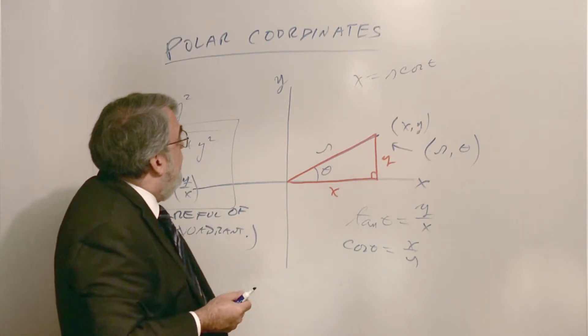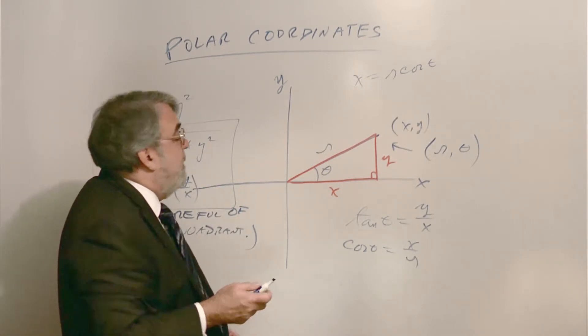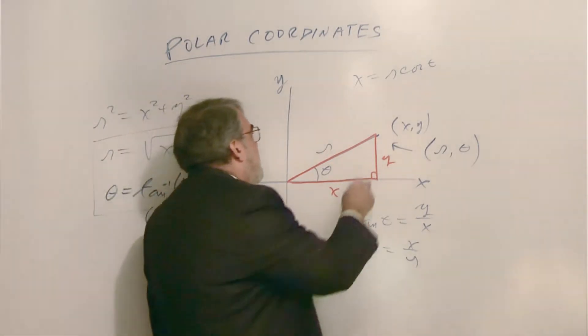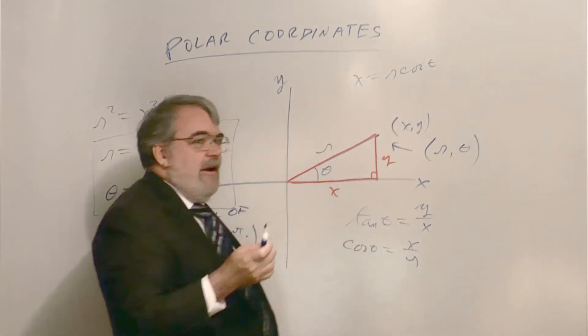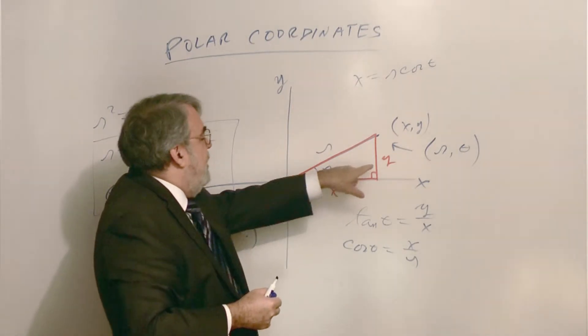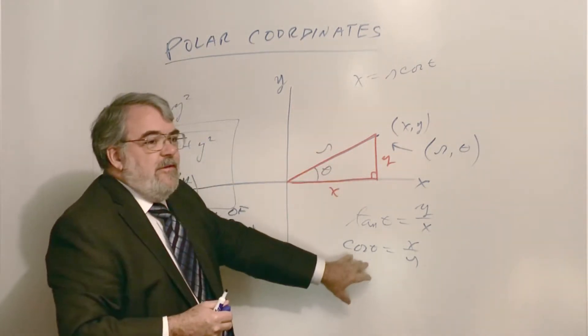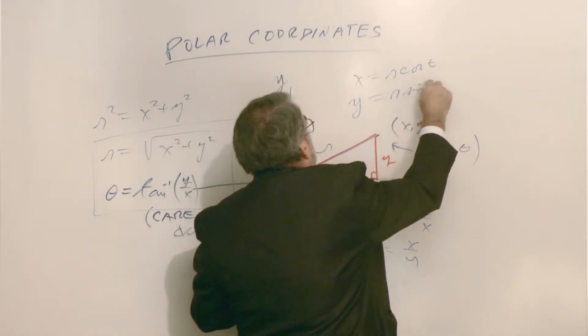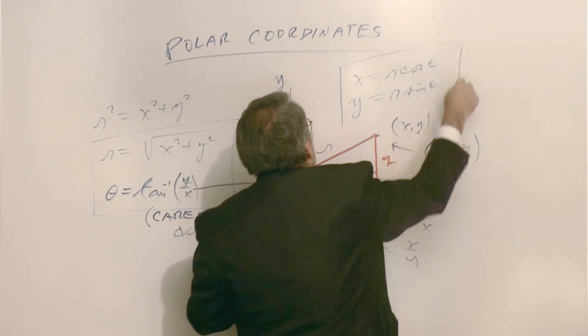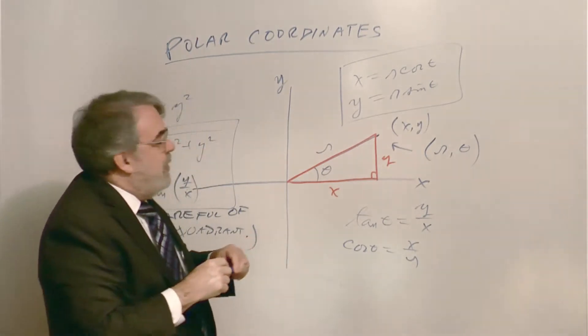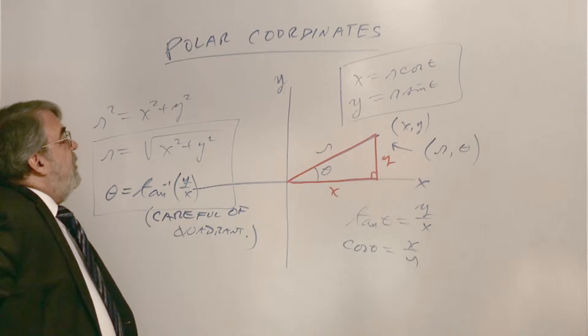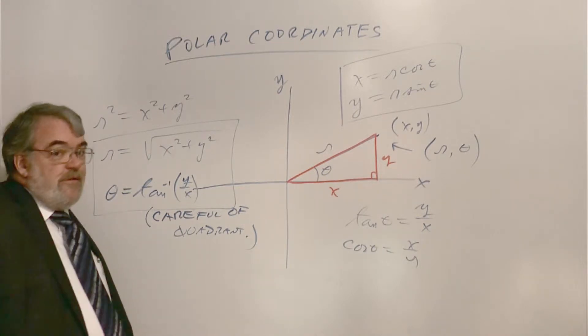And similarly, sine is y over r, so y is r sine theta. Now in this case, you don't have to think about quadrants because cosines and sines will give you the proper positive and negative numbers.